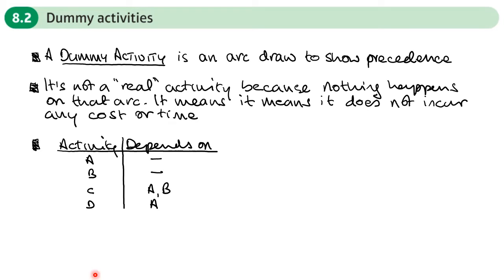So what does a dummy activity look like and why would we need it? So let's consider this precedence table here and let's draw it out. So we start with activity A and B. They are not dependent on previous activities so I will put A going here and B going here.